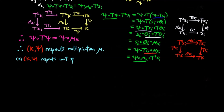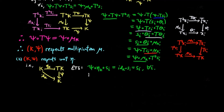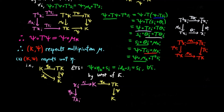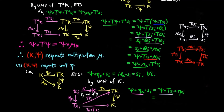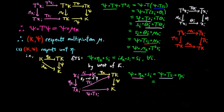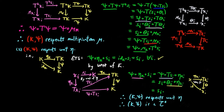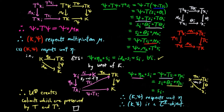We also need to show that (K, Xi) respects the unit eta — in other words, psi∘eta∘K equals the identity on K. It is enough to show psi∘eta∘K∘SI equals SI for each I by the universal mapping property of K. By naturality of eta, psi∘eta∘K∘SI equals psi∘T∘SI∘eta∘Xi. By the commuting red square, psi∘T∘SI equals SI∘thetaI, giving SI∘thetaI∘eta∘Xi. Since (Xi, thetaI) respects the unit eta, this equals SI, which is what we wanted. Therefore (K, Xi) respects the unit eta, and thus (K, Xi) is an Eilenberg-Moore object. Therefore UT creates colimits which are preserved by T and T². That completes the proof.